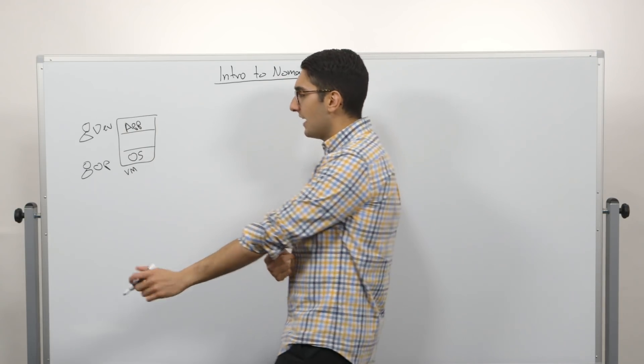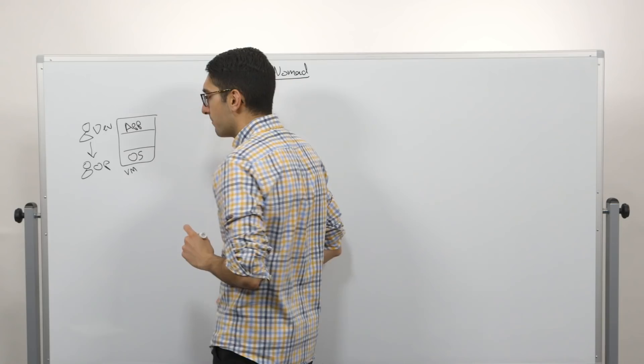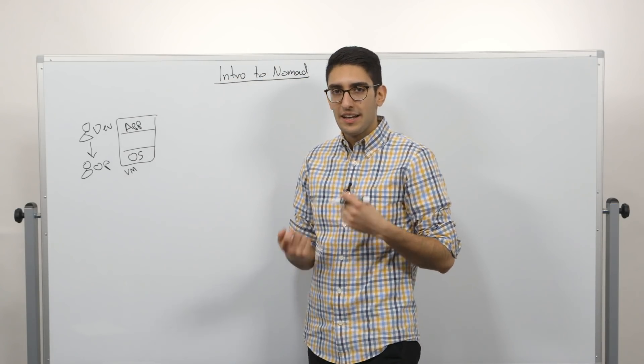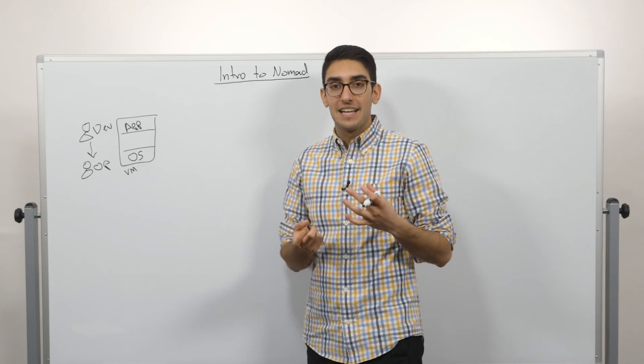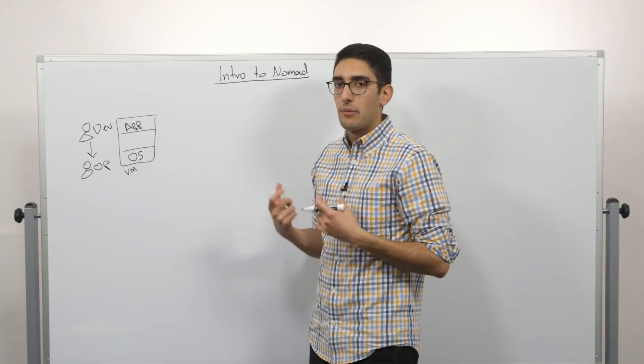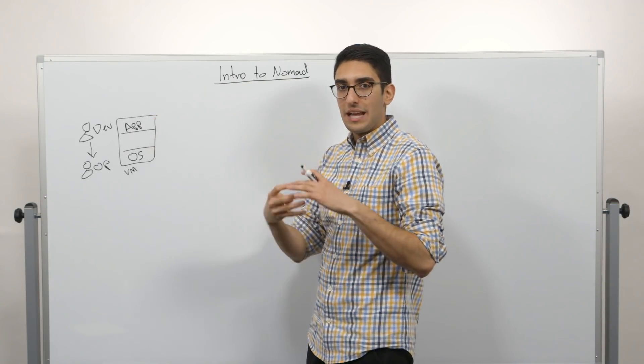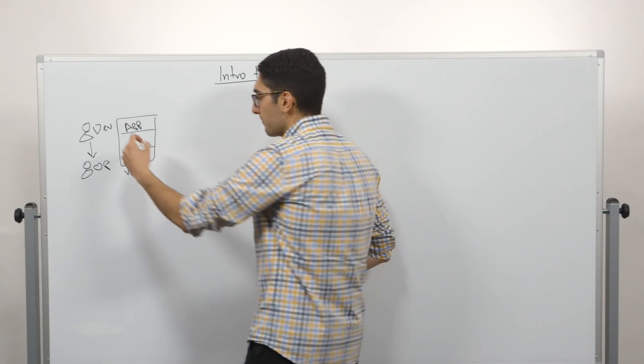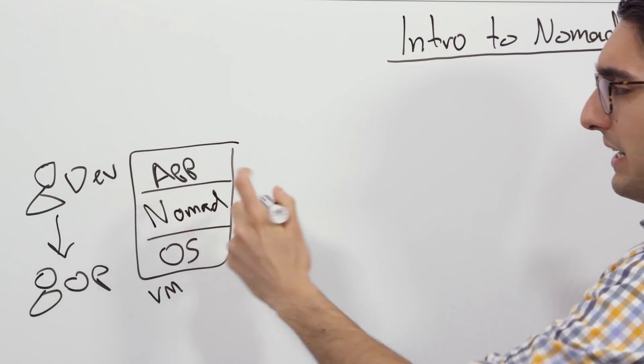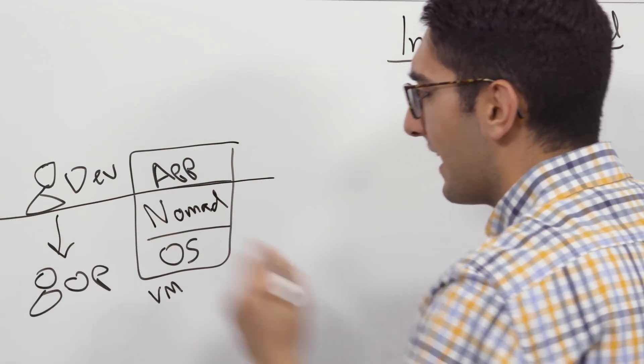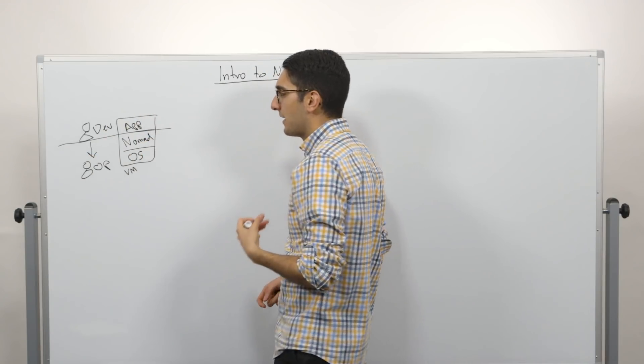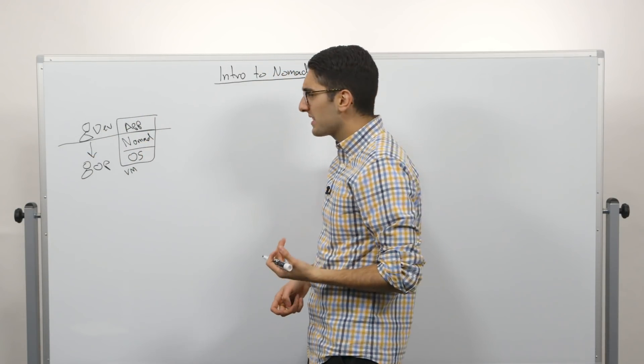So what we often see is the development group has to file a ticket. Anytime the development group wants to do anything application lifecycle related, they have to file a ticket against the operations group. And that's the layer at which the coordination is done. So the first thing we're really looking at when we talk about Nomad is how do we split this so that we can have independent workflows? The primary goal of Nomad is to sit in between here and disintermediate and really provide a layer where we have a southbound API focused on the operator and a northbound API focused on the developer.